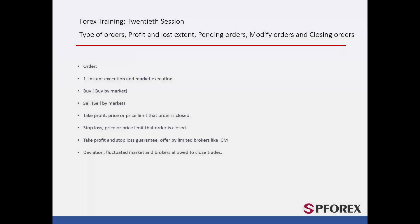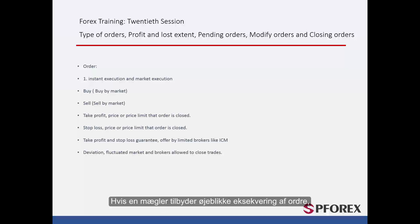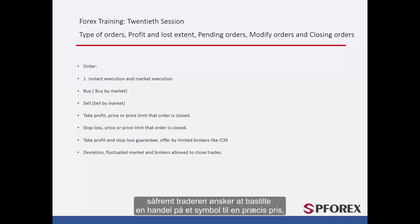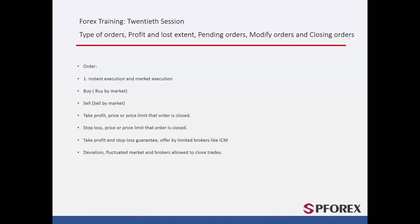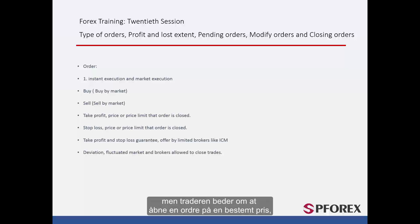Orders can be classified into two types on the basis of their execution method: instant execution and market execution. If a broker provides instant execution orders, a trader who wants to order a trade on a symbol at an exact price requires the broker to place that order exactly at the desired price. If an order cannot be taken, a broker may ask the trader whether he or she would prefer to open the order at another adjacent price. If a broker does not provide instant orders but a trader asks to open an order on an exact price, and that order cannot be placed at the favoured price, a broker has authority to open that order at a price close to the desired price.